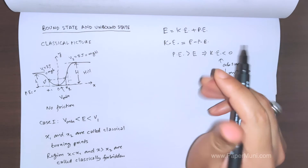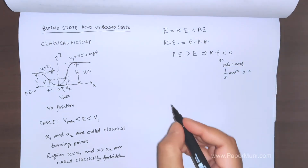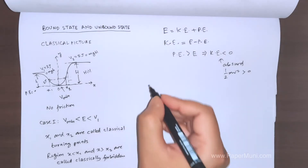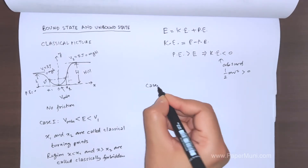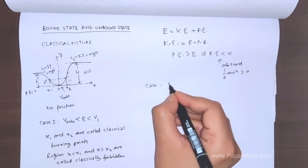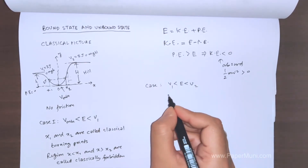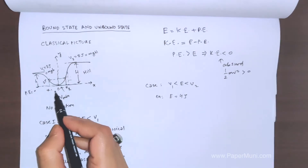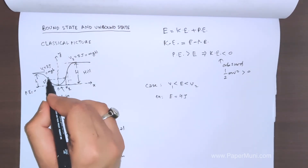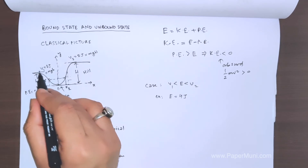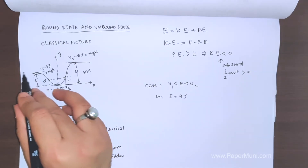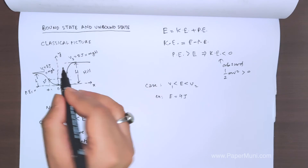In quantum mechanics there is a twist regarding forbidden regions, but let's complete the classical part first. Case two: if we give the ball enough kinetic energy so that its total energy is between V1 and V2 — say four joules, while V1 is three joules — it can go above this hill. At the top of the hill it will have one joule of kinetic energy and it will move freely in that region without stopping.